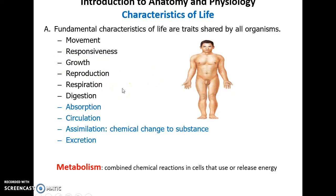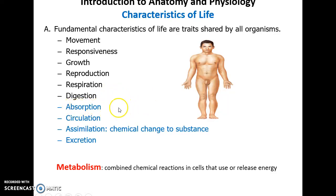Respiration: breathing in and out air. Digestion: bringing in materials and breaking them down, often into nutrients that can be absorbed. Absorption into the body — these nutrients can then travel and be circulated throughout the body. Circulation brings them to cells where they'll be absorbed.